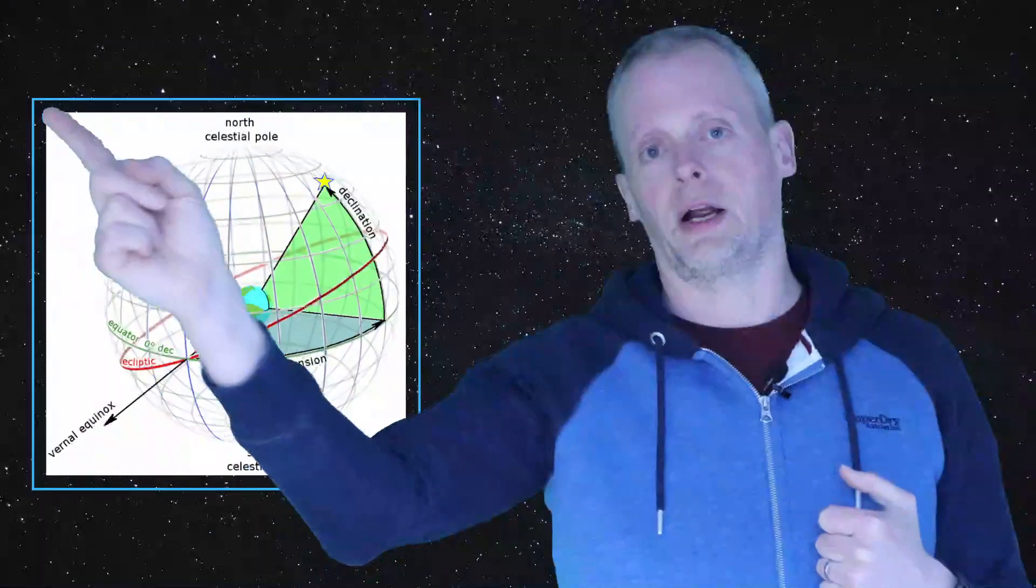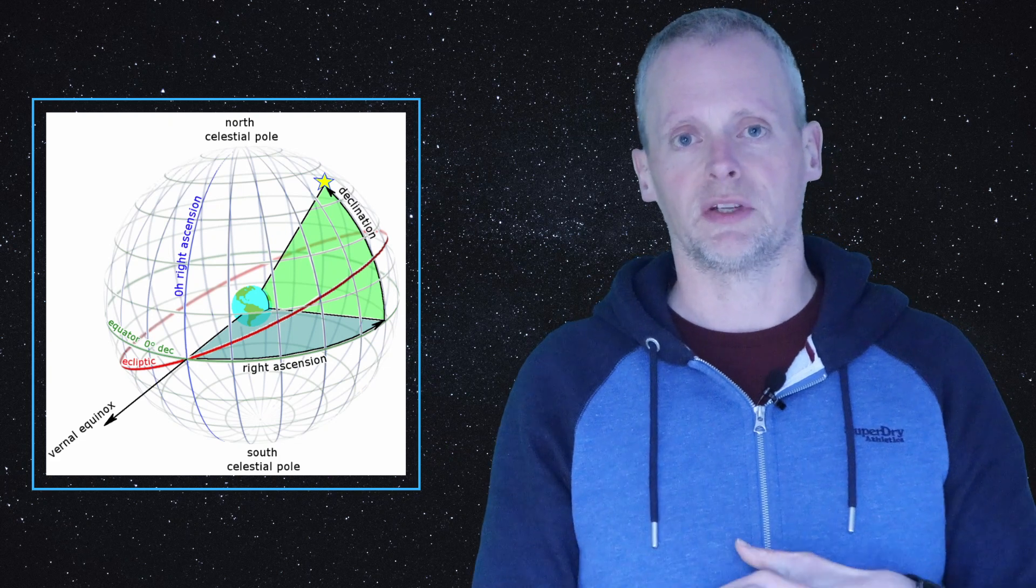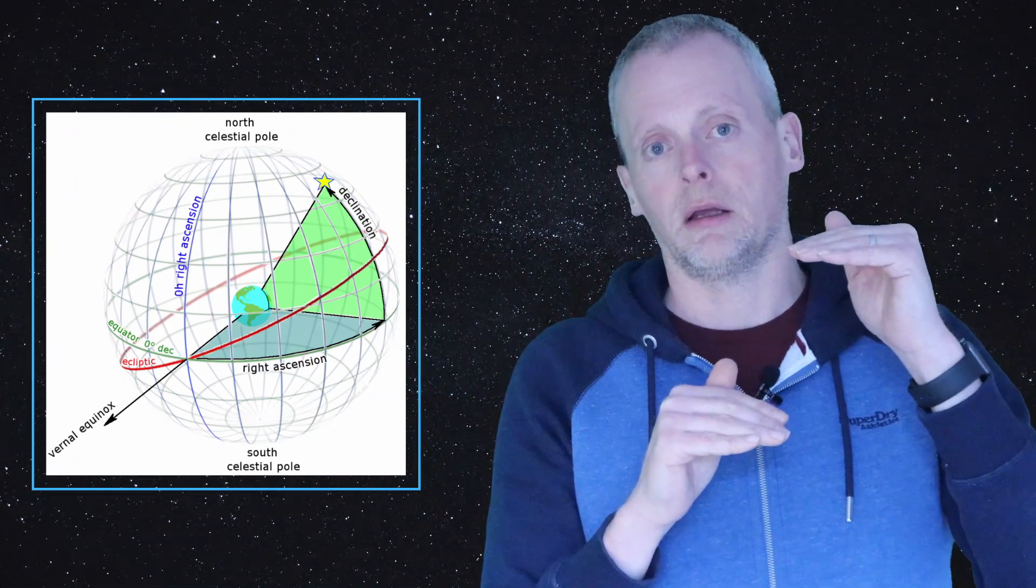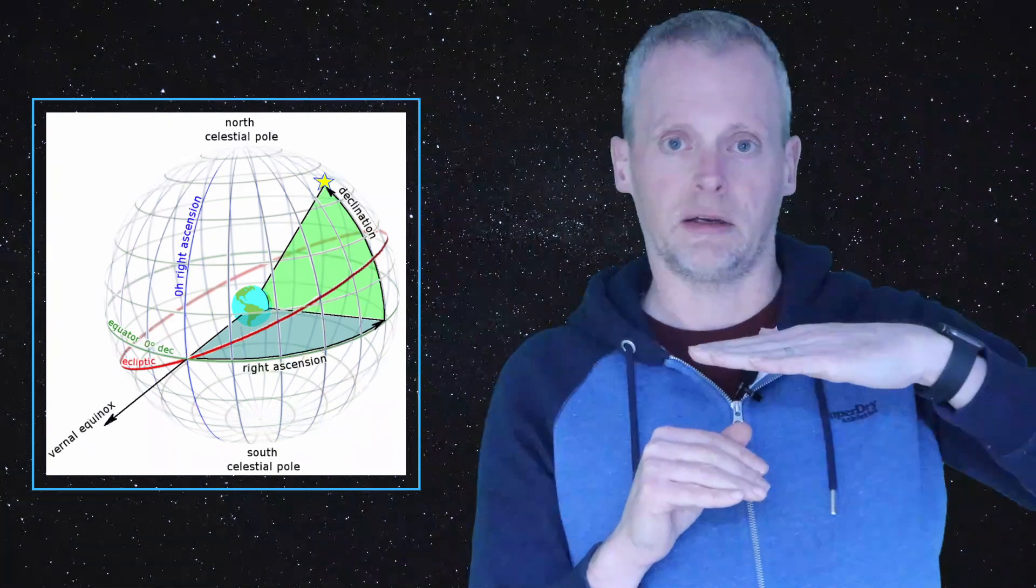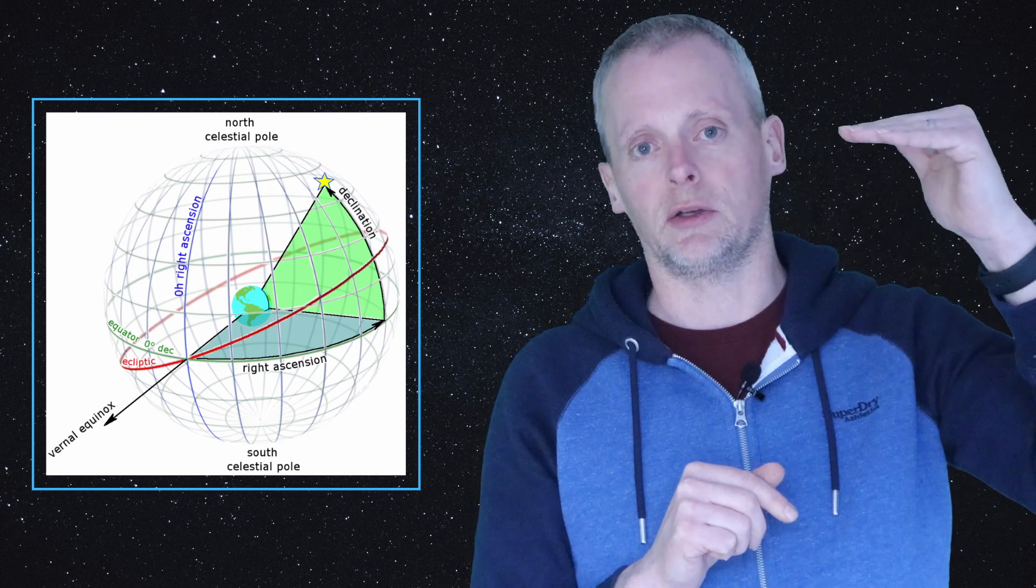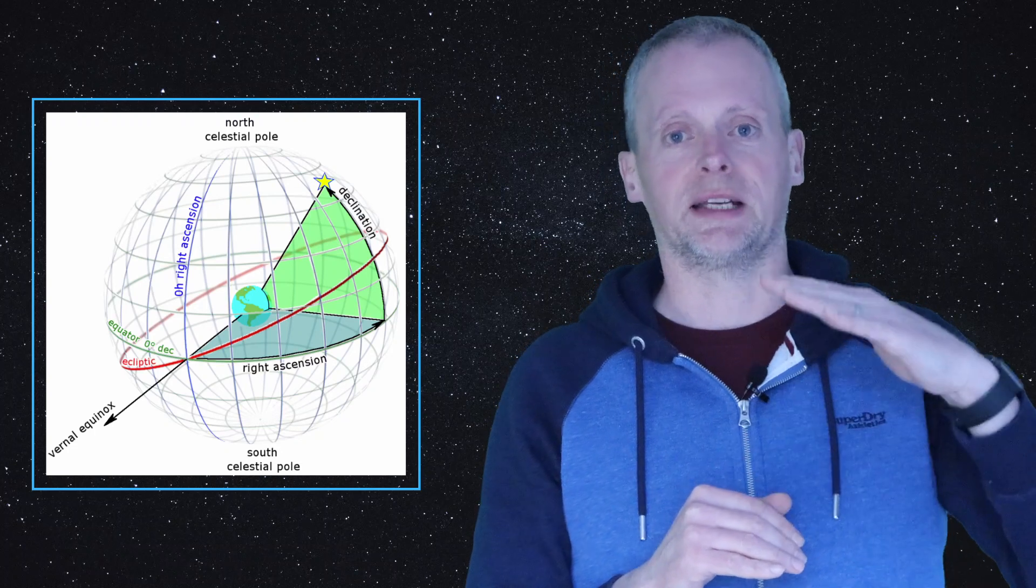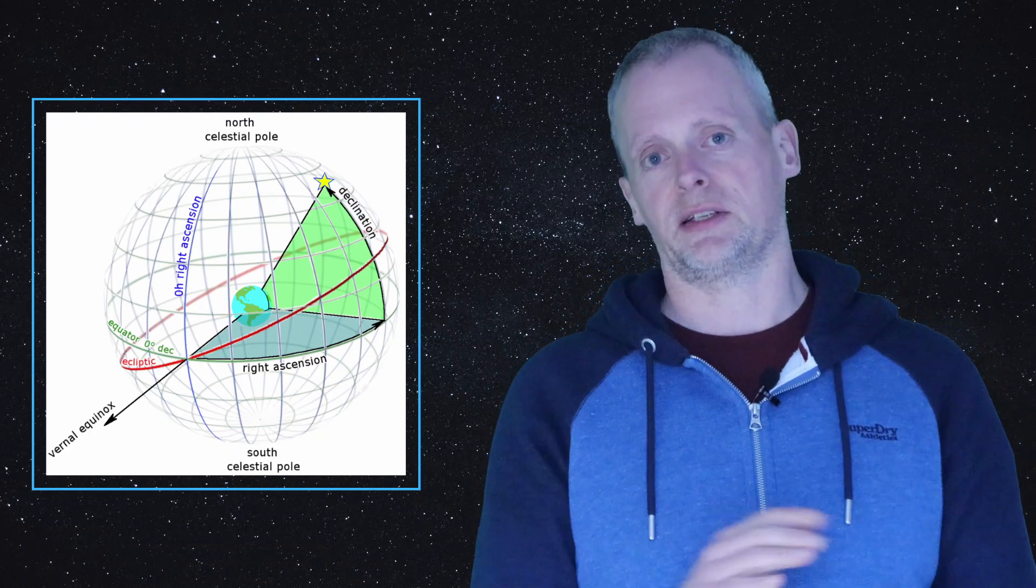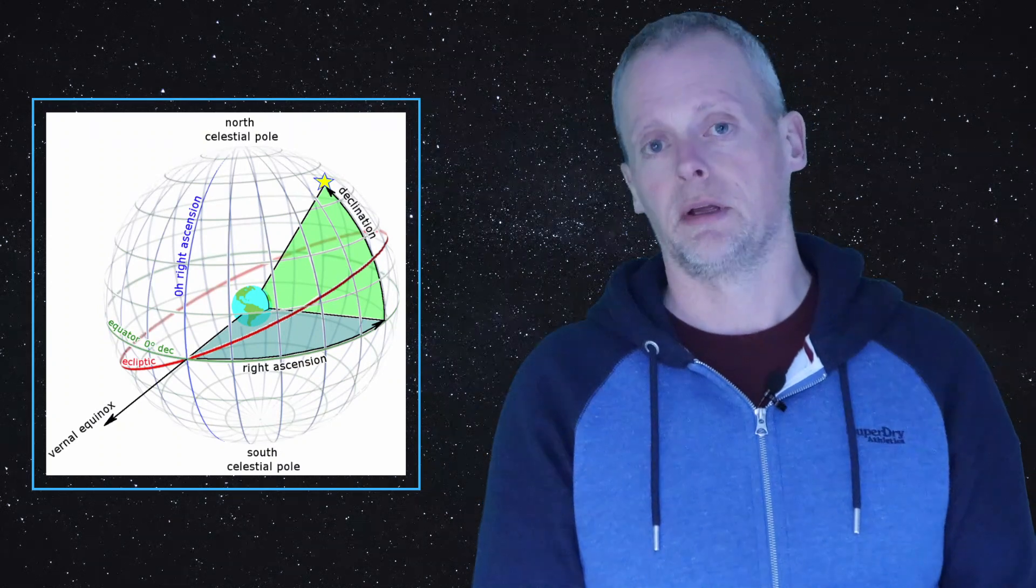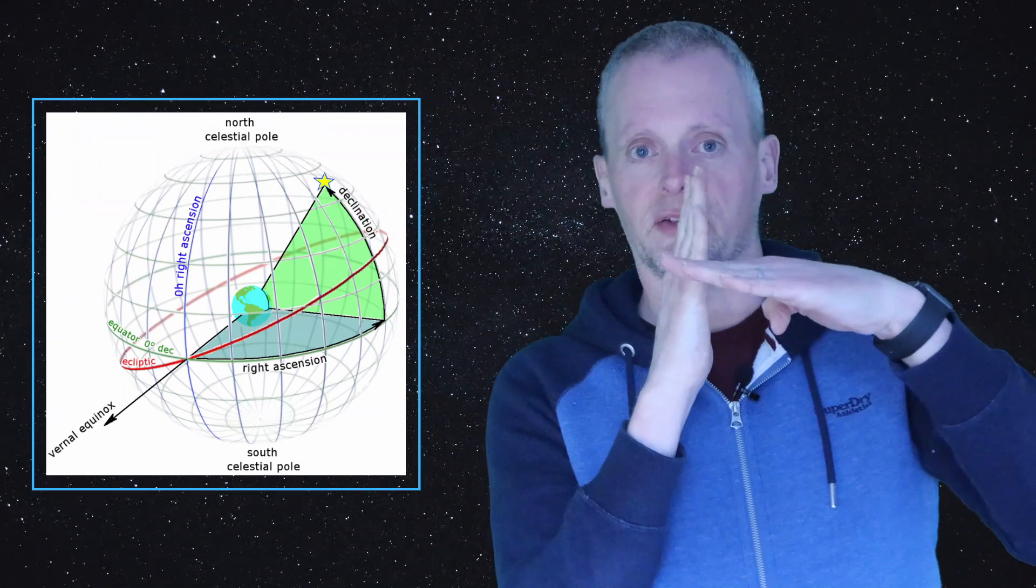Declination then is split into again minutes and seconds, but this time we go north and we go south. Instead of having hours as the major divider, we actually have degrees. Working from the celestial equator up to the north pole, we'd have 10, 20, 30, 40 all the way up to 80 and then 90 degrees north, which would be the north pole. South from the celestial equator we have minus 10, minus 20, minus 30, minus 40, down to minus 90 degrees, which is the south celestial pole. In between the degrees we have 60 minutes, and the minutes are further subdivided into 60 seconds. So now we have a right ascension measurement, we have a declination measurement, and where those cross is the coordinate for the object that we are looking for.